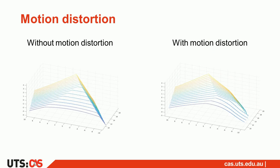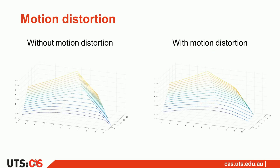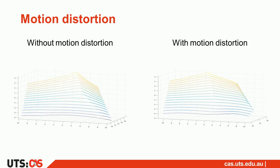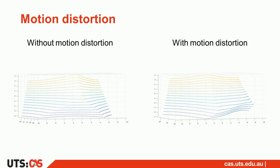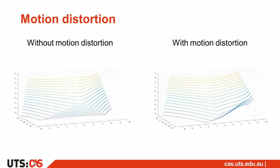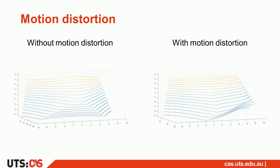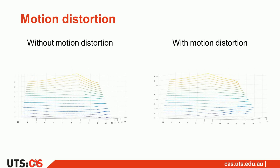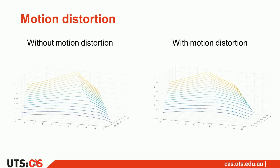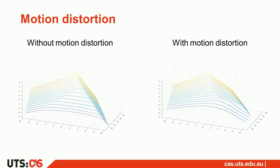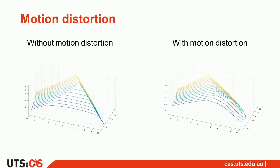The IMU gives information on the system dynamics and the LiDAR provides geometric scans of the environment. With commonly made assumptions, the LiDAR scans are subject to motion distortion.